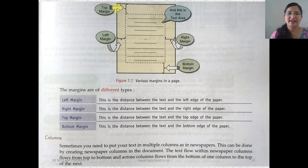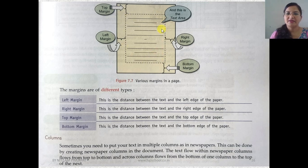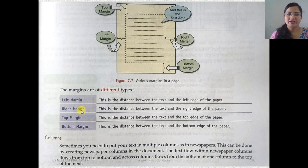There are four types of margins: top margin is the space between the text and the top edge of the paper; left margin is the distance between the text and the left edge; right margin is the distance between the text and the right edge; and bottom margin is the distance between the text and the bottom edge of the paper.